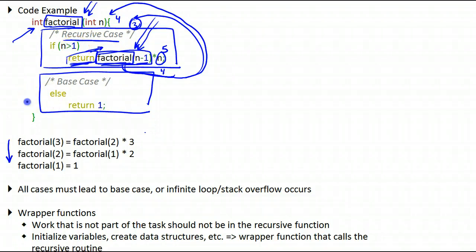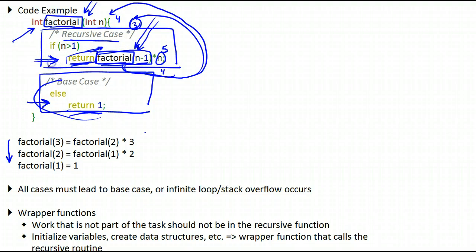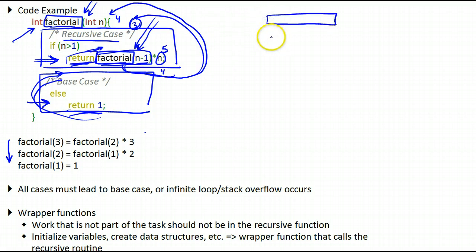Until you reach the point where n is equal to 1, you will simply return 1. When you return 1, you will start working your way up from all of these calls that were put in a pause state, and now you will replay them. So when you were working out the solution, you put certain states of the function in a pause state.